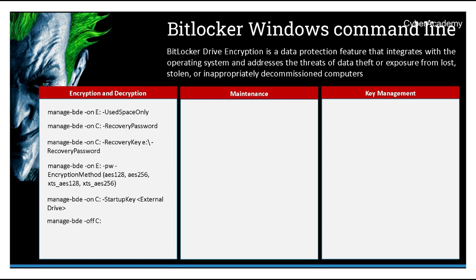Finally, we can turn off encryption on the C drive. If for some reason we need to lock or unlock, we can use the -unlock option on a BitLocker-encrypted drive, providing the path to the recovery key so that the action can be performed.